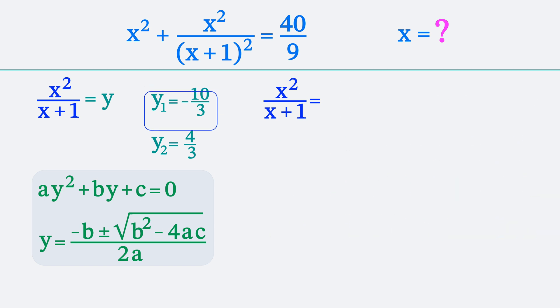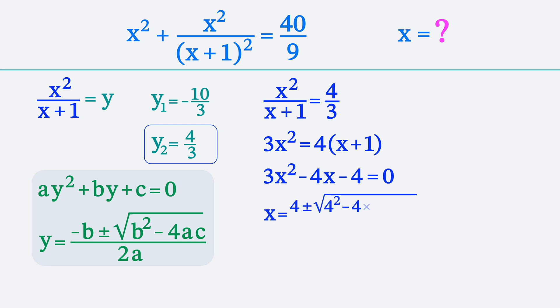Let's consider the second equation. X squared divided by x plus 1 is 4 thirds. We multiply the elements of the equation according to the property of proportion. Then we transfer everything to the left side. Let's again apply the formula for calculating the roots of a quadratic equation with a discriminant.